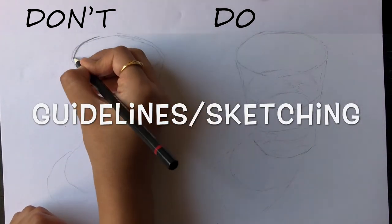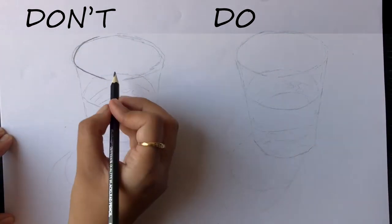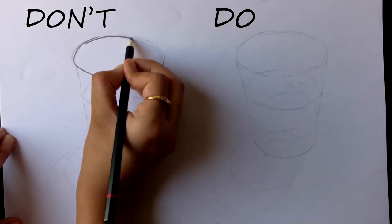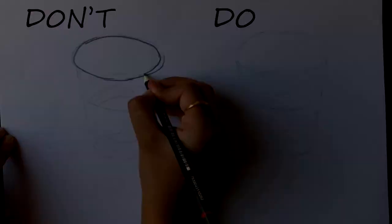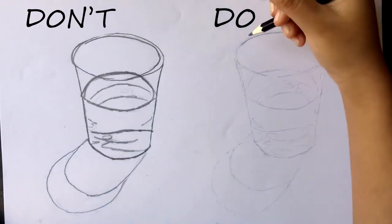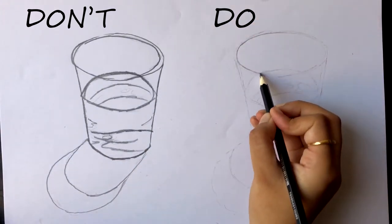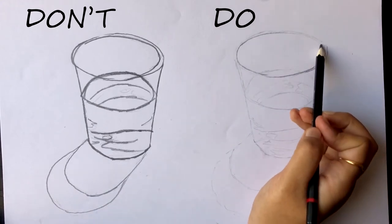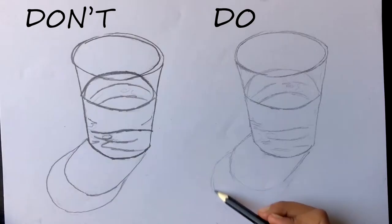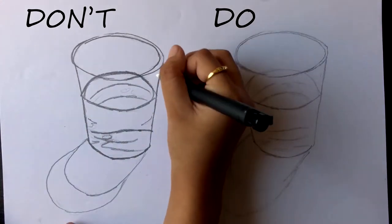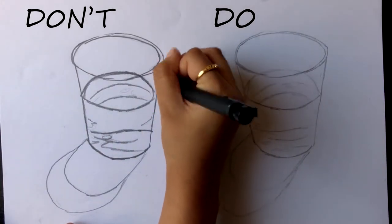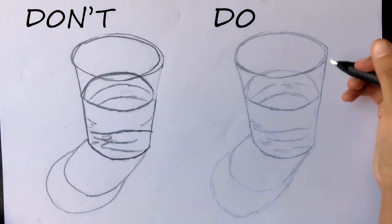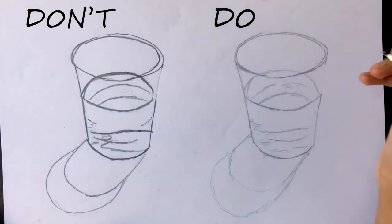A common mistake is when artists draw their guidelines or sketches super dark. This prevents the drawing from having a realistic effect and it leans more towards a cartoony effect. Instead, we want to draw the basic sketch lightly and then darken up only the borders that are needed. This will also make it easy to erase the guidelines if you make a mistake. As you can see, even after erasing, the guidelines are still visible on the left side, while on the right side, they're close to invisible.